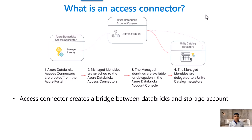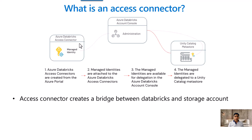Now let's understand what is an Access Connector — this is a brand new component in Azure. Whenever you try to deploy a Unity Catalog, you need to deploy the Databricks Access Connector and enable its managed identity. All connectivity to storage — whether it is a storage account in Azure or an AWS S3 bucket — will only happen with the help of the Databricks Access Connector. Access Connectors are created either via CLI or directly in the portal, and once you enable the managed identity, the Databricks account can access any item via this connector seamlessly.